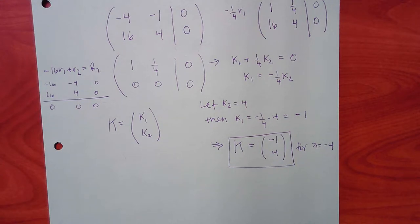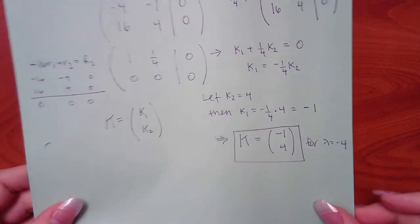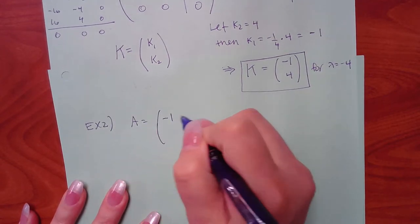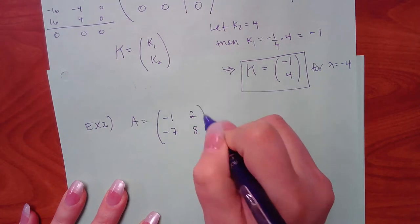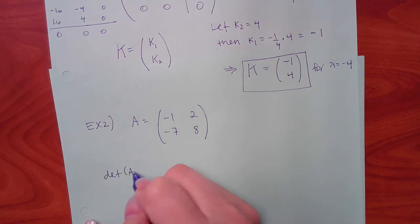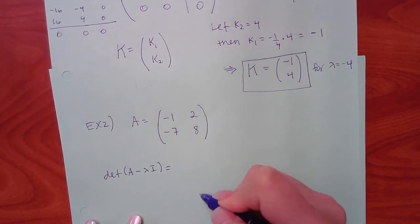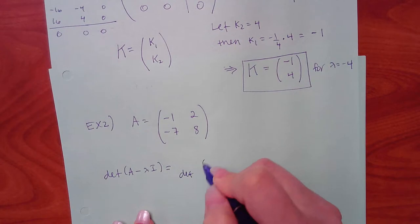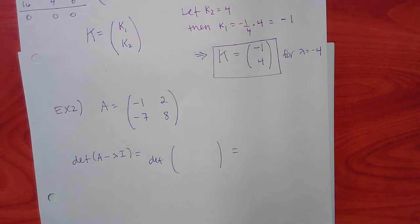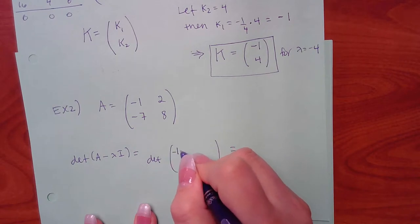Now Example 2 — we might get more than one lambda. We compute the determinant of A minus lambda I. Using the shortcut, only the diagonal entries get a minus lambda: negative 1 minus lambda and 8 minus lambda; off-diagonal entries stay the same.